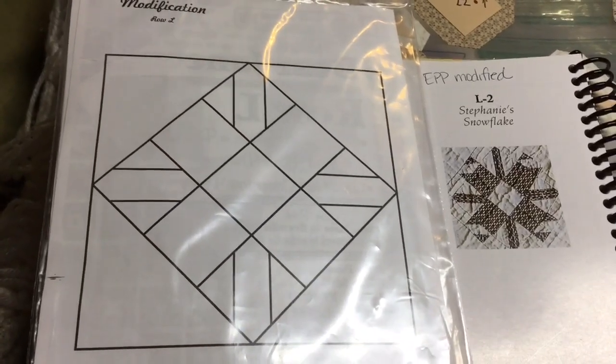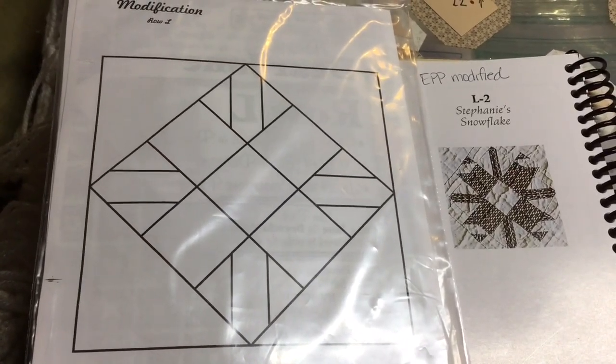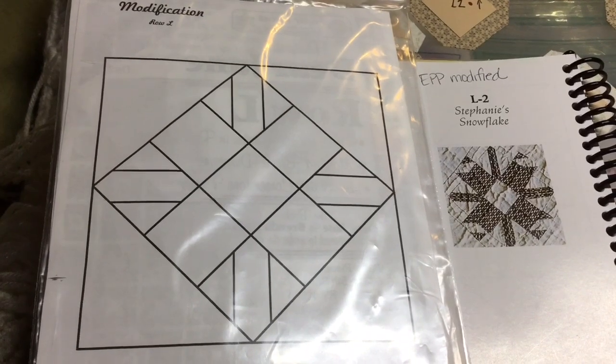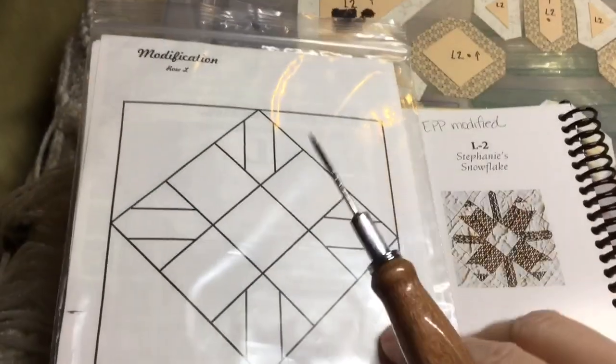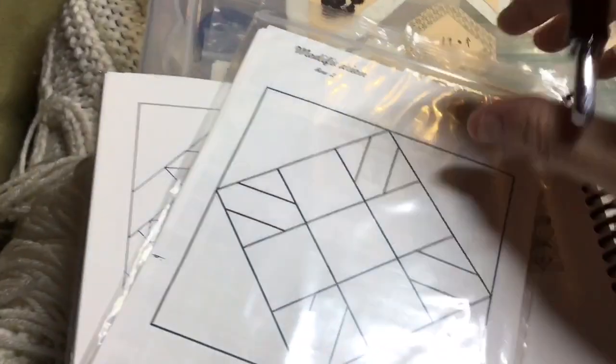So we're going to be working from this diagram in the book and what's going to happen with assembly is we are going to assemble this like a 9 patch block. So if you turn this this way it's easier to see.